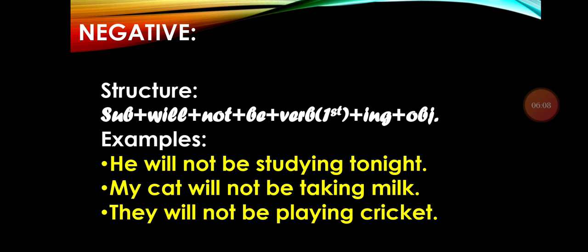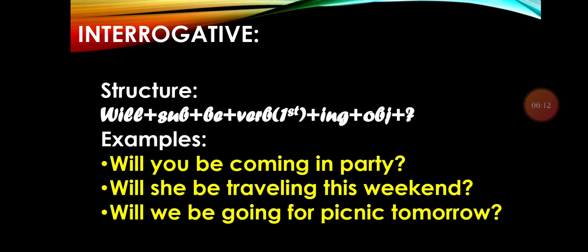For the interrogative, we always start the sentence with the helping verb 'will,' followed by the subject, then 'be,' then the verb in first form with -ing, then the object, and a question mark. Examples: 'Will you be coming to the party?' 'Will she be traveling this weekend?' 'Will we be going for a picnic tomorrow?' If you feel any confusion or need more details, you may ask.